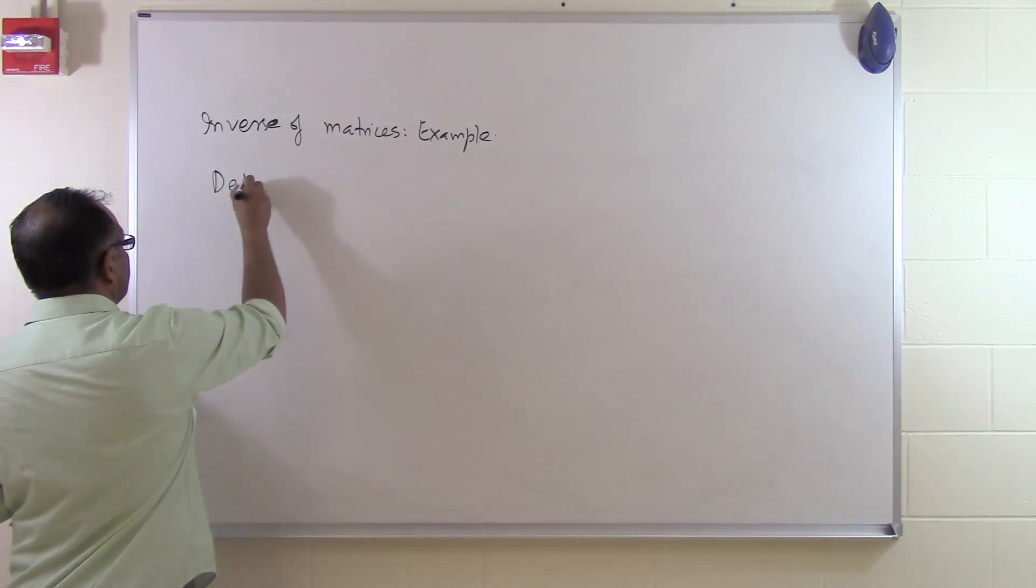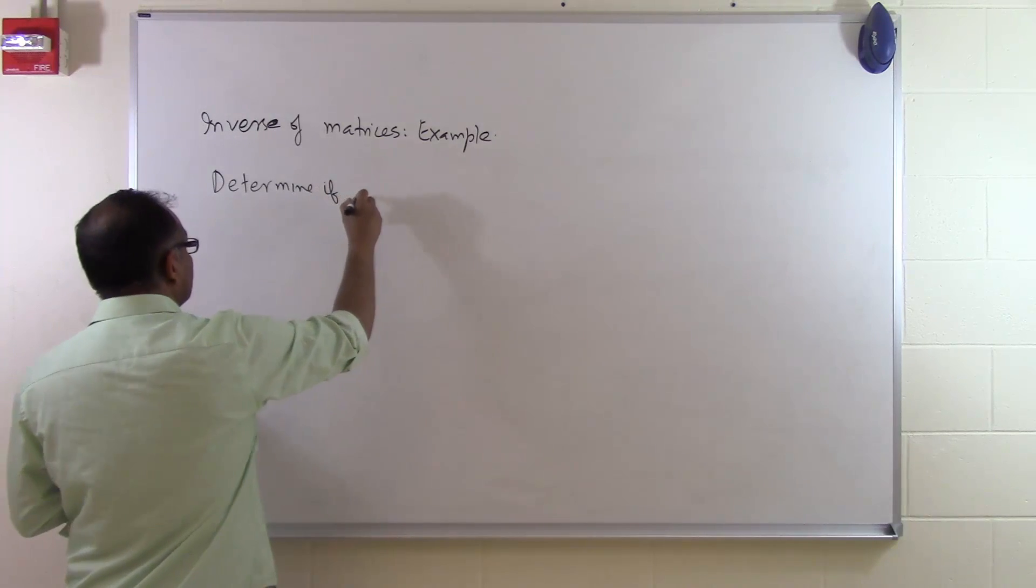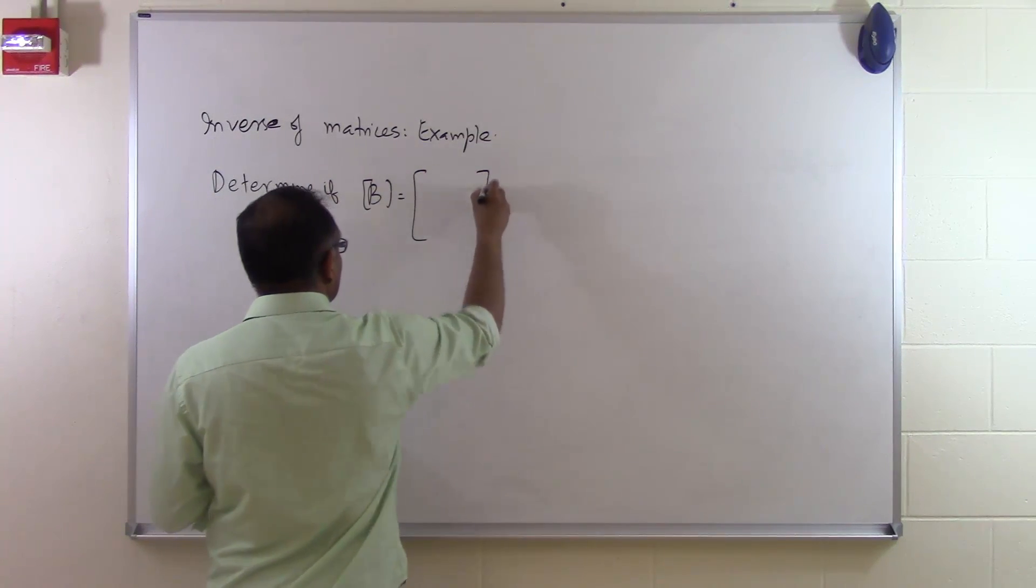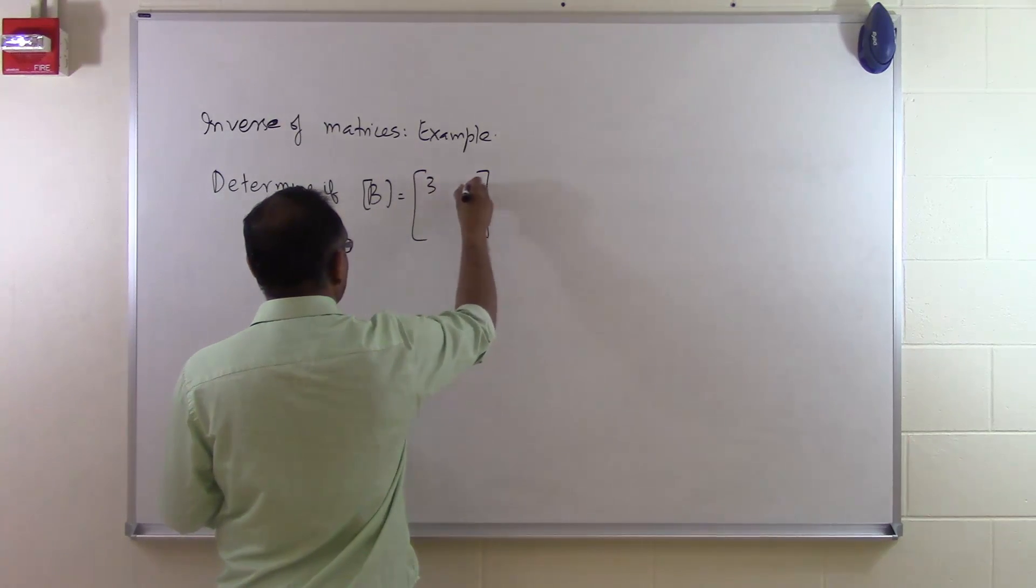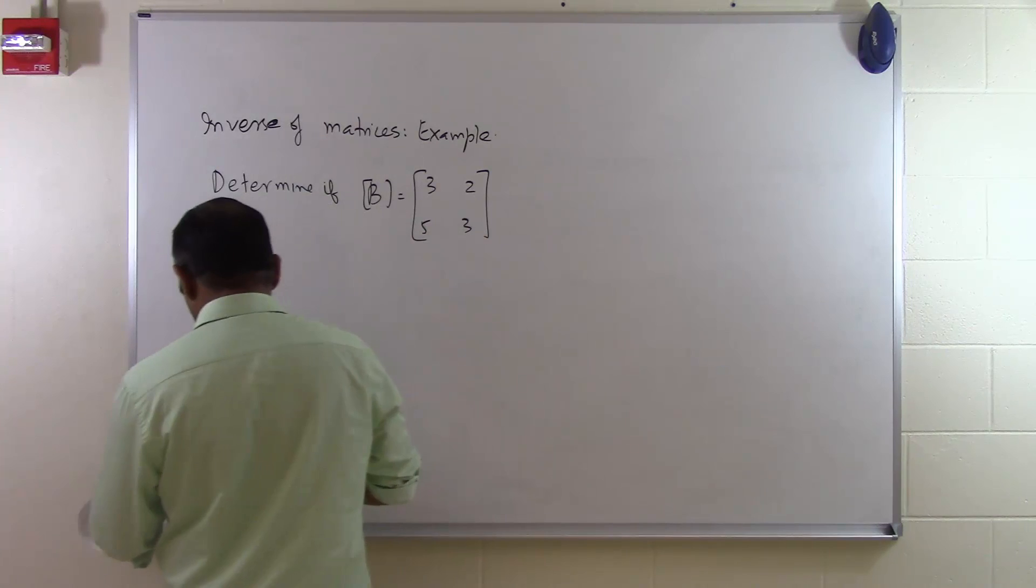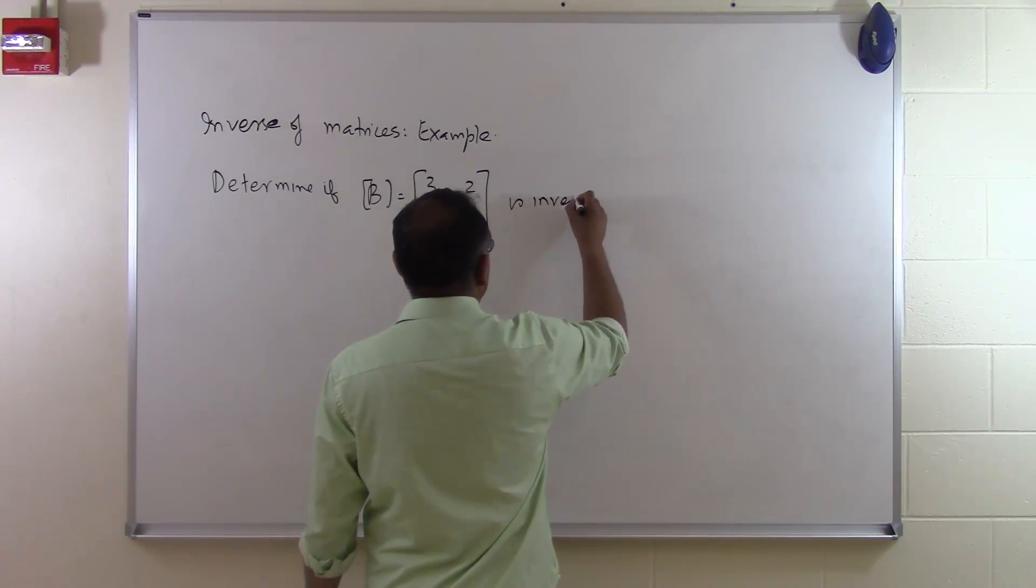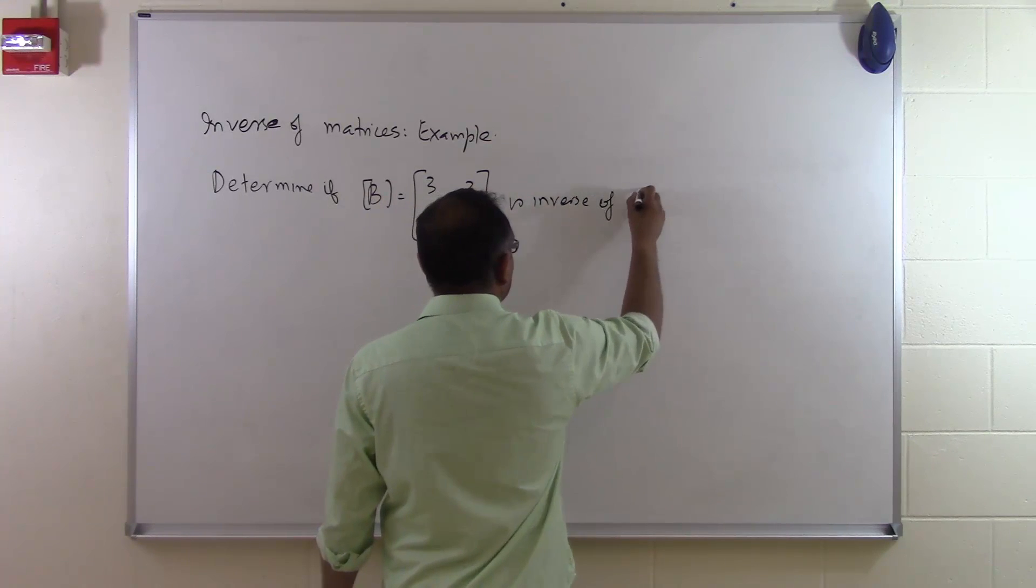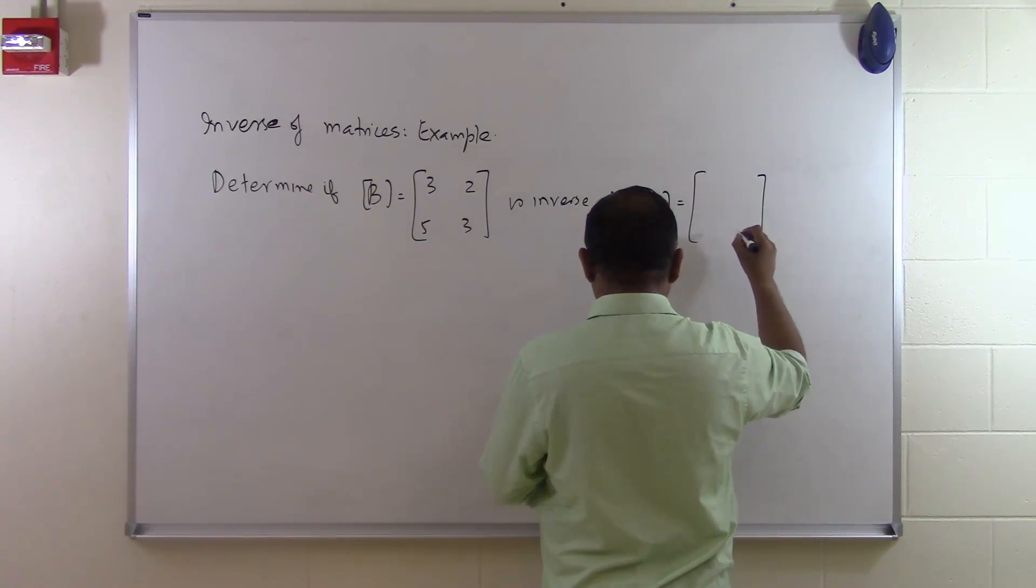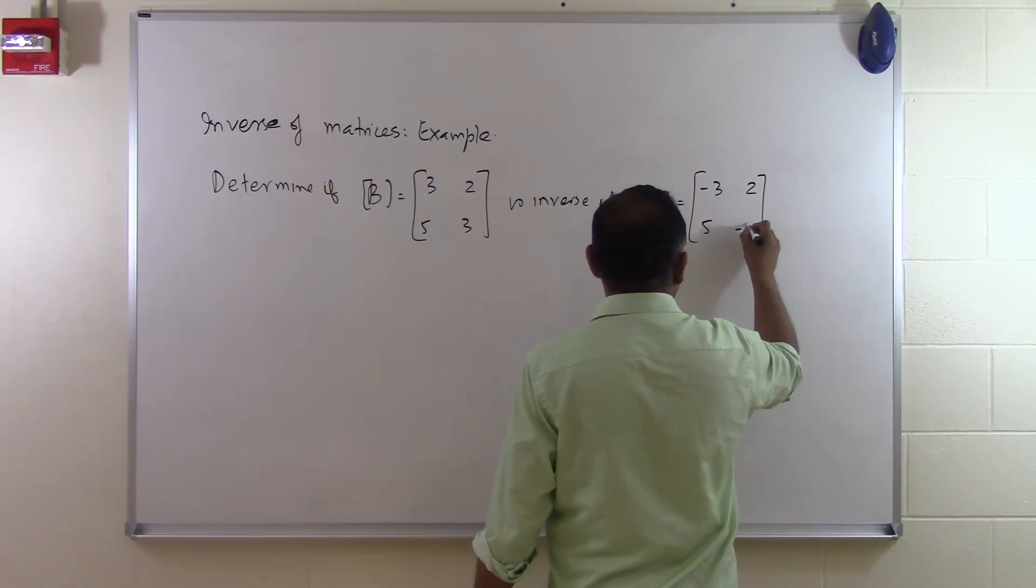So let's suppose the problem statement says determine if B matrix, for example a 2 by 2 matrix 3 2 5 3, is inverse of this particular matrix. So this A matrix which is written as minus 3 2 5 minus 3.